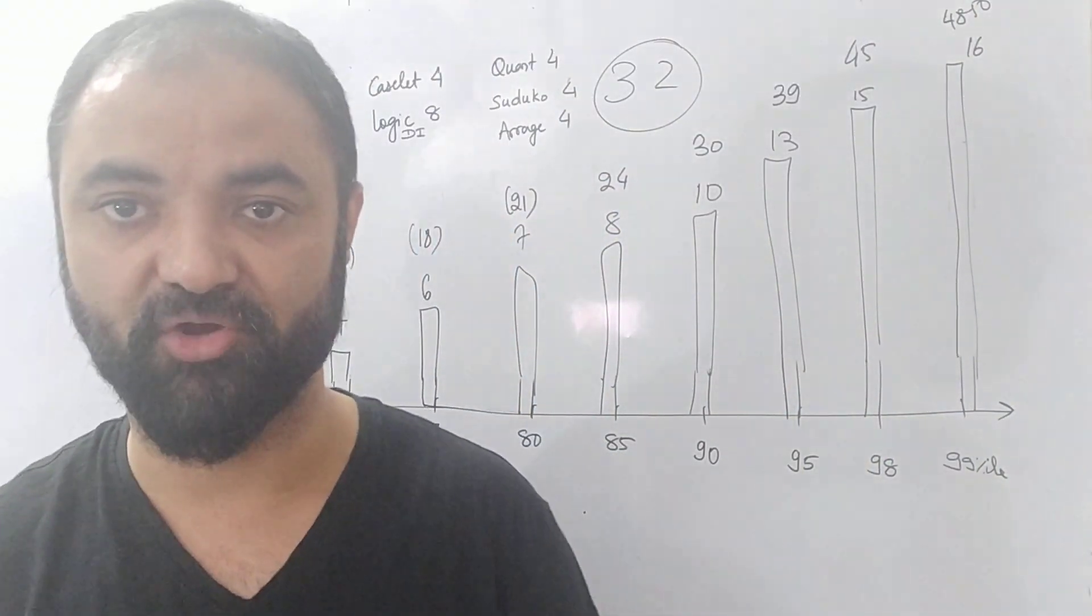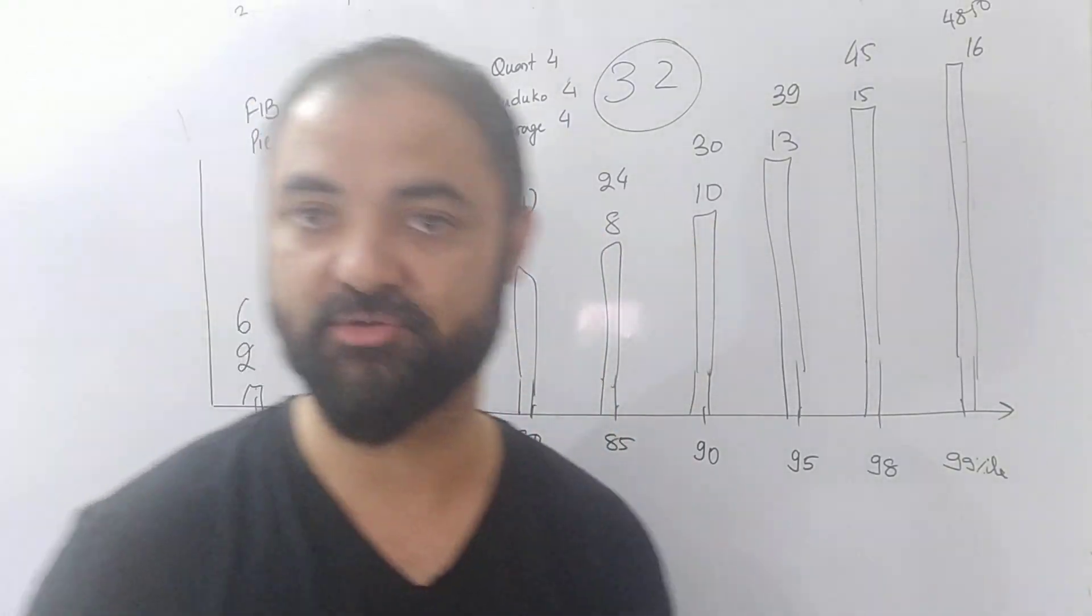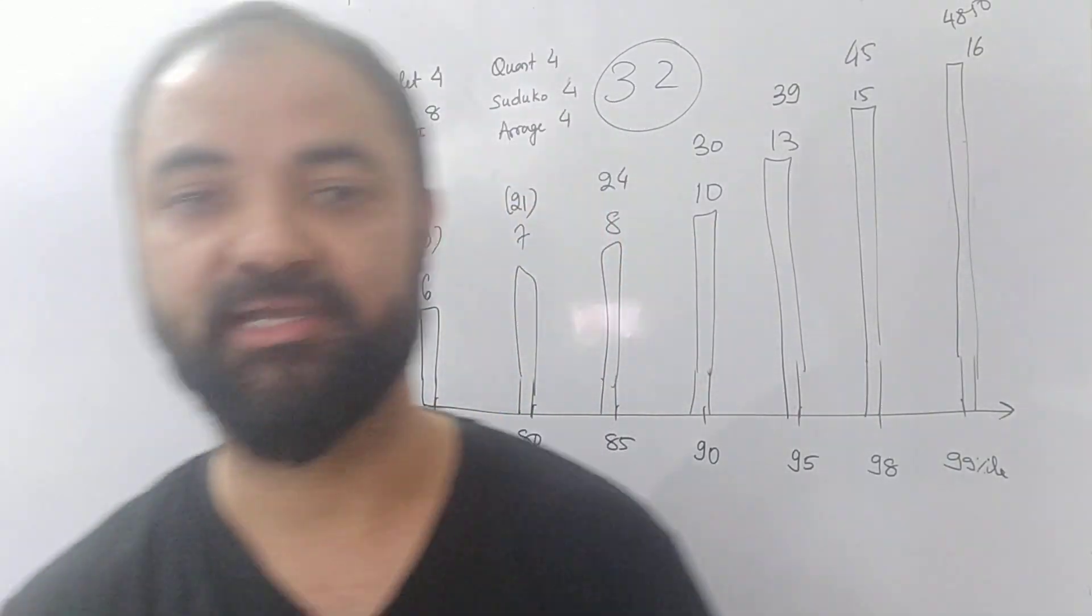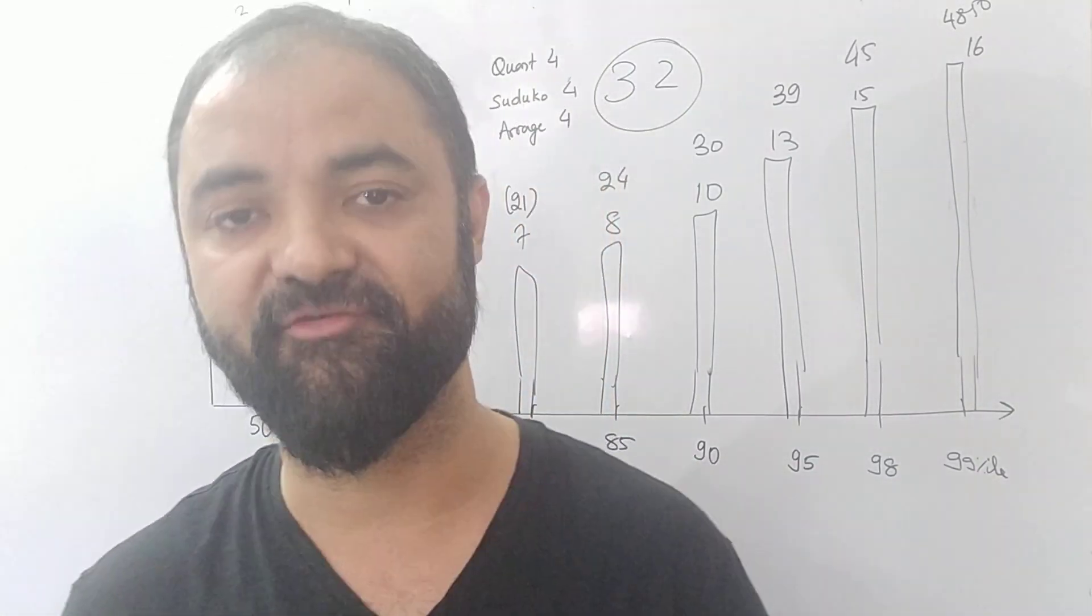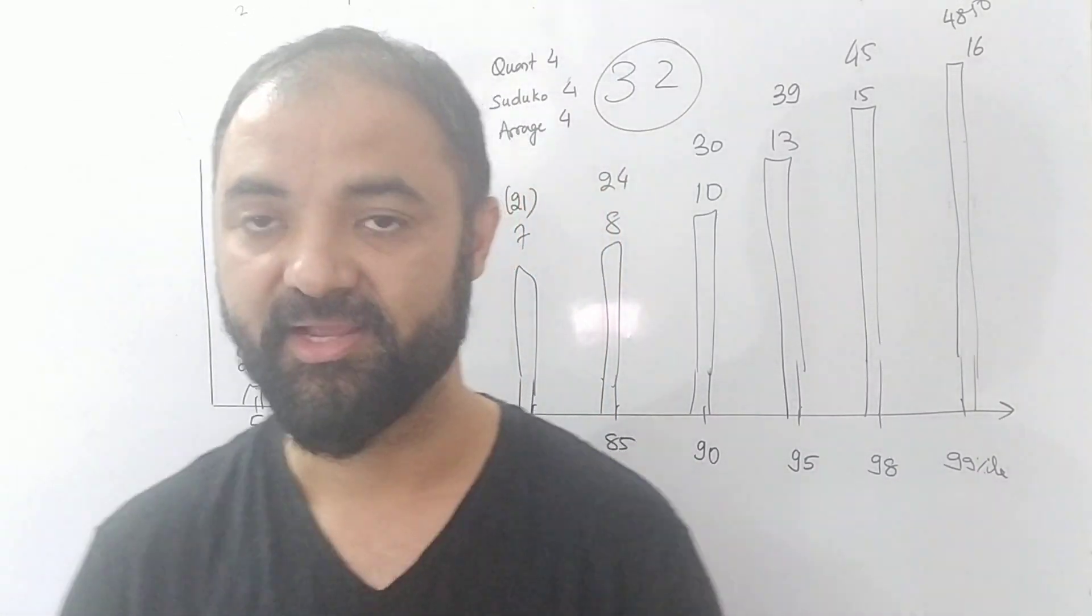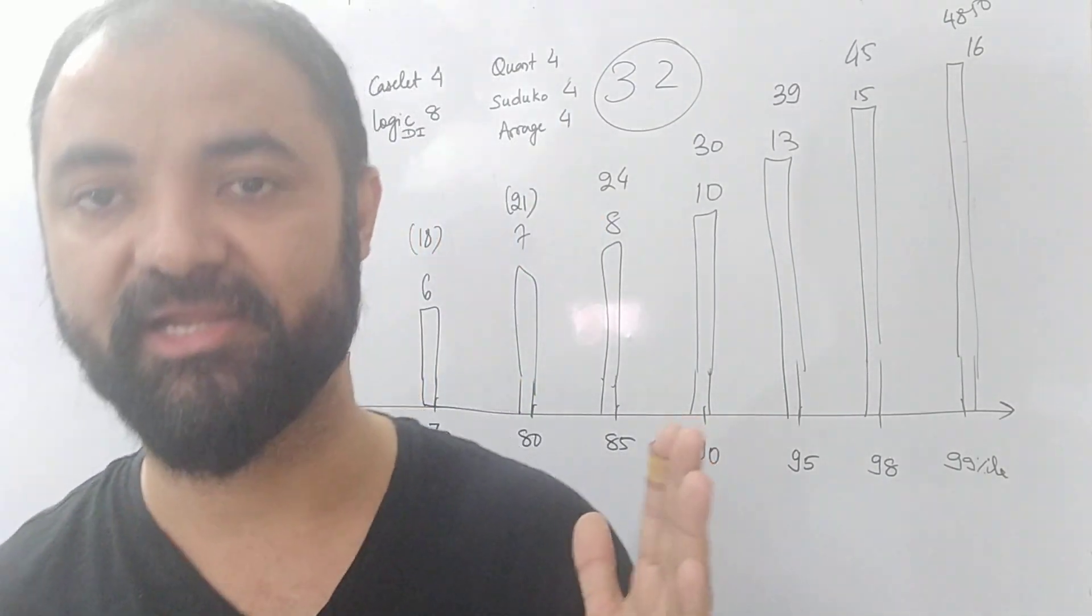If you are looking at the new IIM call, it will start at 80 percentile. So those who have scored more than 7 questions correct, 21 marks, you will get new IIM call, provided obviously you have maintained the academic record, you have your 10th-12th good marks, and you have done well in the other sections as well.